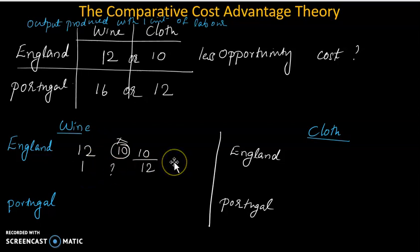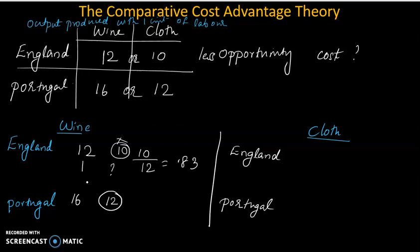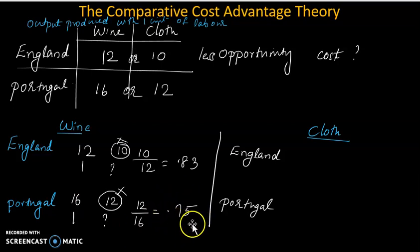So 1 unit of wine in England costs 10 divided by 12 units of cloth. For Portugal: 1 unit of wine production — the opportunity cost is 12 divided by 16. That equals 0.75 units of cloth. Less opportunity cost is 0.75, so Portugal has comparative advantage in wine.